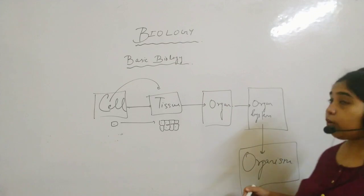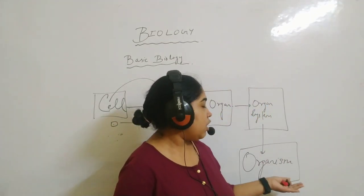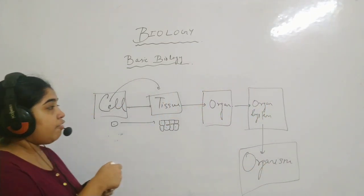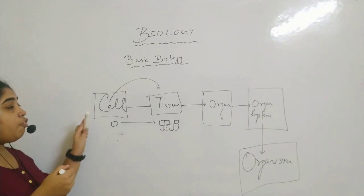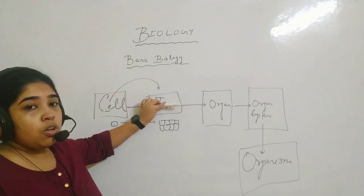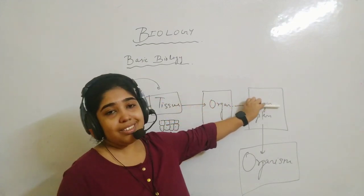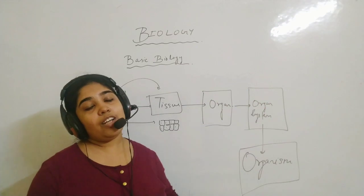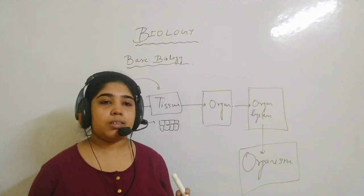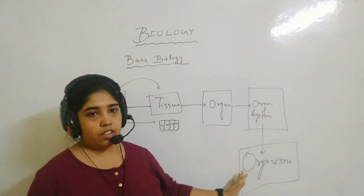We individuals are what? We are organisms. So this is how life evolves: from cell to tissue, from tissue to organ, then organ system, and then the individual organism. This is how our life evolves.